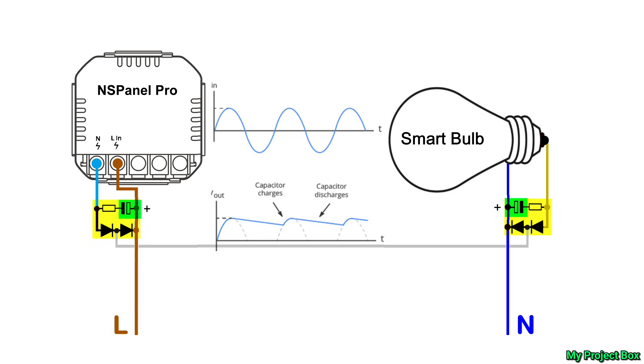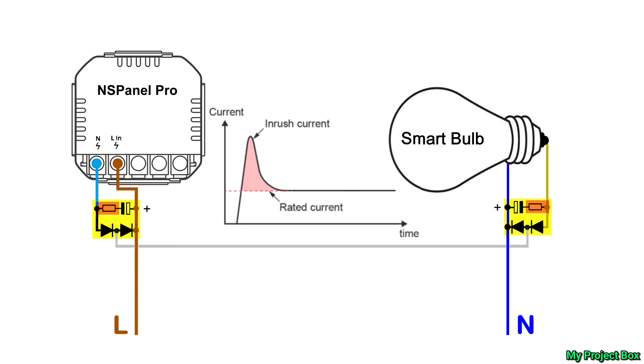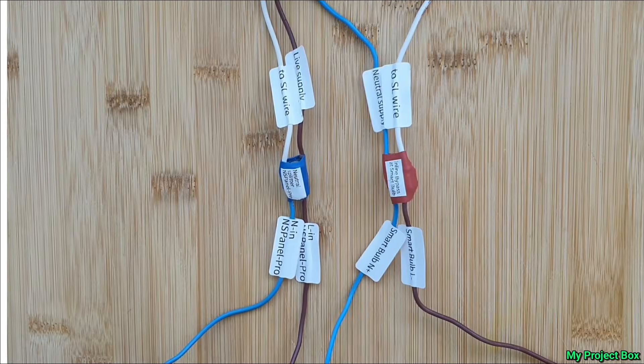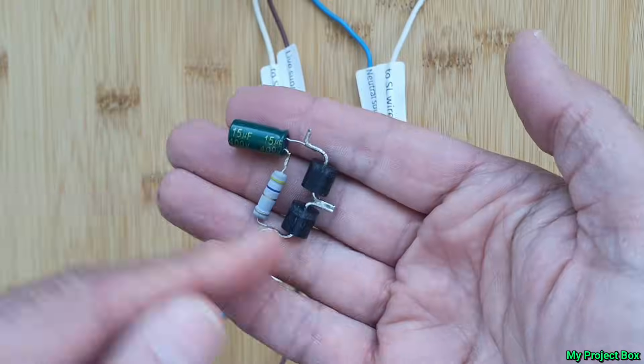I've also added capacitors to smooth out the ripply waveforms so that the NS Panel gets a nice smooth power supply. This also gets rid of the ripple on the smart bulb side so you don't get any unwanted flickering either. Each capacitor has its own inrush limiting resistor. This limits the large current spike when the capacitors first charge up. It helps to prolong the life of the capacitor and the diodes. Okay that's the theory. Let's see how these modules can be used in practice.